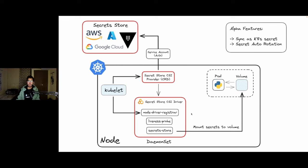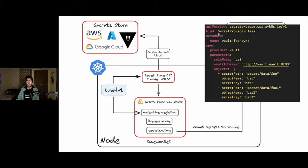Inside the CSI driver, three components work side by side: node driver registrar — which registers that particular node — liveness probe for health checking the CSI driver itself, and the secret store, which we use to mount onto our volume. The important component is the CSI provider, which is a custom resource definition called secret provider class. Here you define which provider you're using — in this example, Vault as the secret store provider — providing the Vault server's address and the path of the secrets stored on the Vault server.